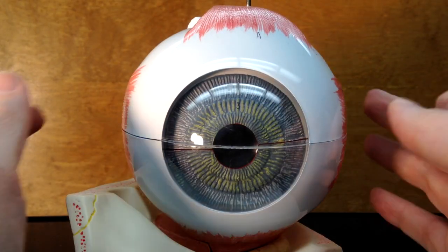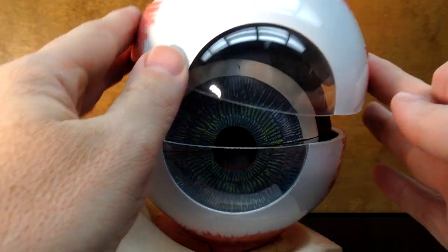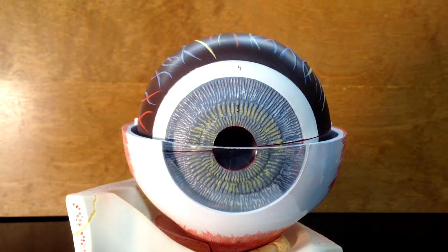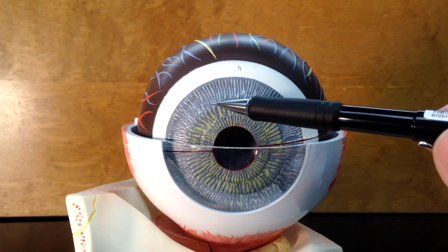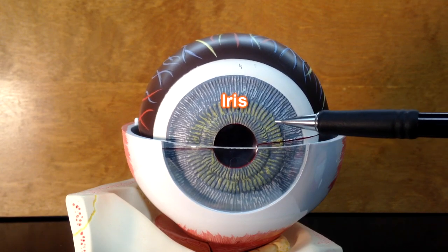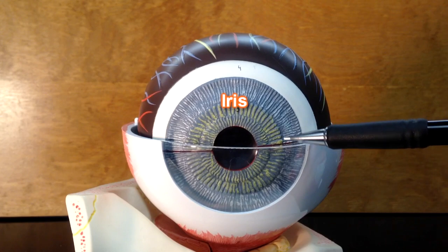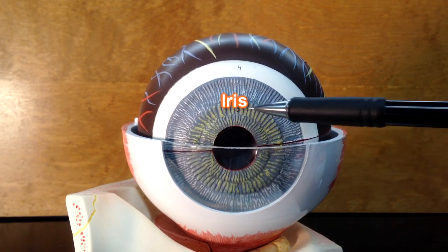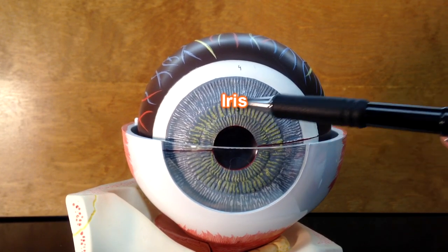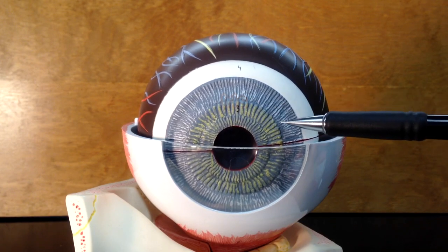Now here's the cornea and if I were to take the top of this model apart, we can see more stuff on the inside. We get a better view of the iris right here. This is the iris. This is what's going to give you your eye color. This person has blue eyes because they have a blue iris.